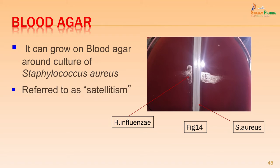On blood agar H. influenzae can also grow, but requires something to release Factor X and Factor V from the blood. Staphylococcus aureus and some fungi have the capacity to produce these factors. When Staphylococcus aureus is streaked down the center and H. influenzae plated across it, the growth of H. influenzae is more luxuriant and abundant around the Staphylococcus colonies than away from it. This phenomenon is referred to as satellitism, because the Staphylococcus produces factors required for the growth of Haemophilus.